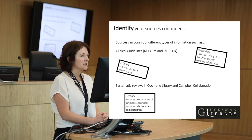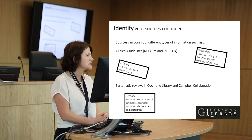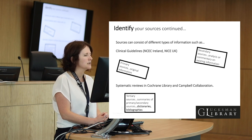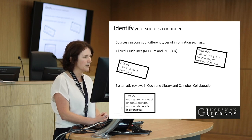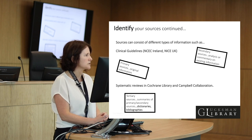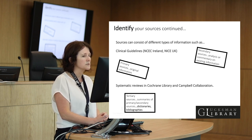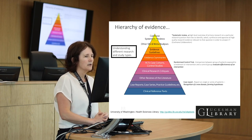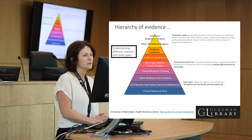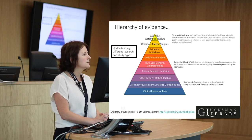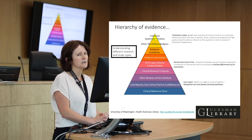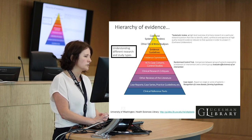Sources can consist of different types of information, such as clinical guidelines — for example, the National Clinical Effectiveness Committee in Ireland and the National Institute for Clinical Excellence in the UK. Primary sources are the original information. Secondary sources might be an analysis or commentary on existing original information. Tertiary sources are summaries of primary and secondary sources, such as dictionaries and bibliographies. Systematic reviews can be found in the Cochrane Library and the Campbell Collaboration. At the top of the hierarchy of evidence are Cochrane Systematic Reviews — a high-level overview of primary research that identifies, selects, synthesises, and appraises all high-quality evidence relevant to a question in order to answer it.